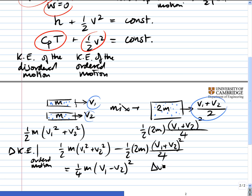And as v₁ minus v₂, or delta v, increases, we get an increased loss of kinetic energy of ordered motion.